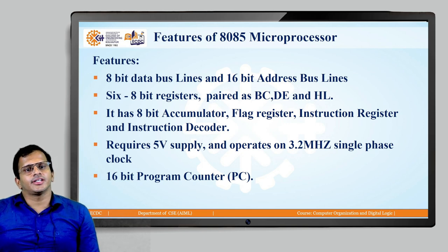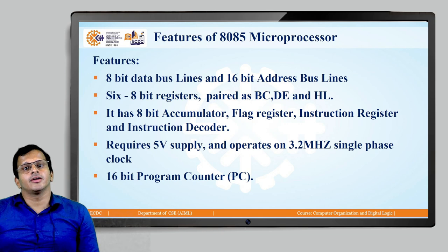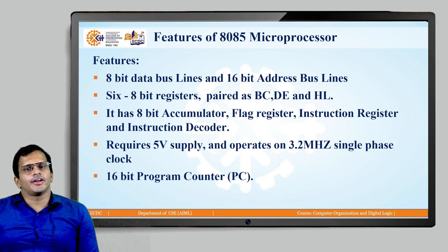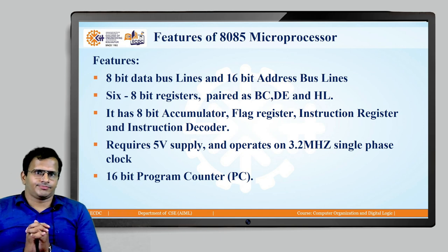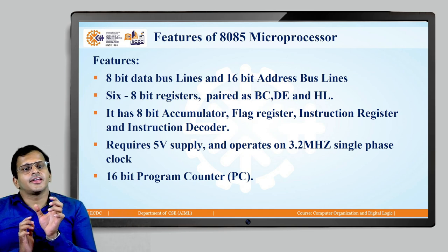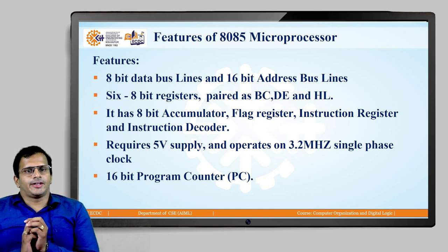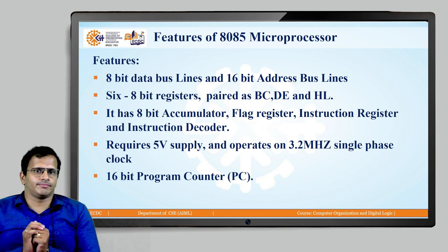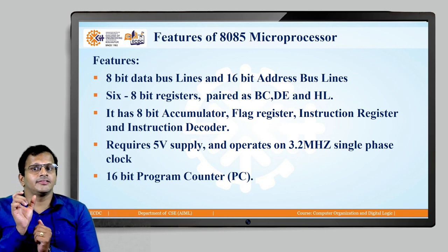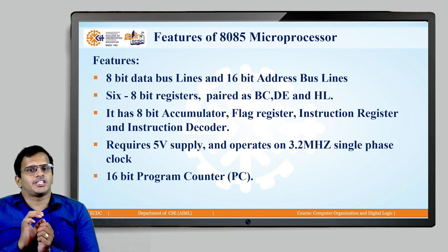Another 2 registers are the accumulator and flag register. Among the registers, the 6 important ones are B, C, D, E, H, and L. Each register saves 8 bits of data, and when we want 16-bit data, we have to make the pairing of registers — either BC, DE, or HL.